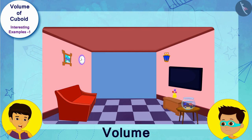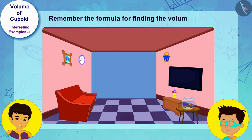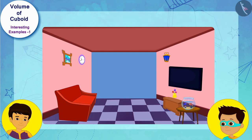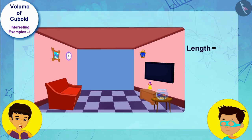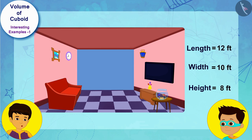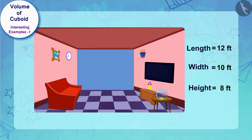Look Thomas, this room is in the shape of a cuboid. Do you remember the formula for finding the volume of a cuboid? Of course Manas, the volume of any cuboid is equal to the product of its length, width, and height. The dimensions of the room are 12 feet, 10 feet, and 8 feet respectively. Friends, can you find the volume of this room?